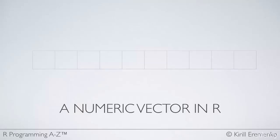The definition of a vector is a sequence of data elements of the same basic type. The way I imagine a vector is like a horizontal bookshelf with lots of sections, and in each one of these sections you can put a number. So in the first section we put 50, second section 34, 111, and so on. Basically we're putting numbers into this vector — there are 10 numbers — and this is a numeric vector. Numeric basically means either integer or double, so basically anything that has a number. This is a numeric vector of length 10.